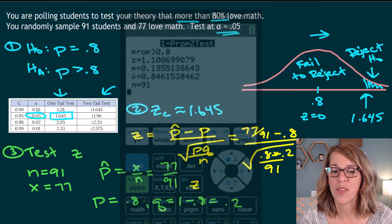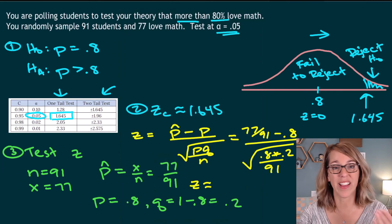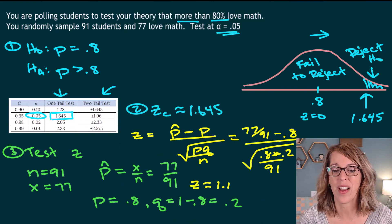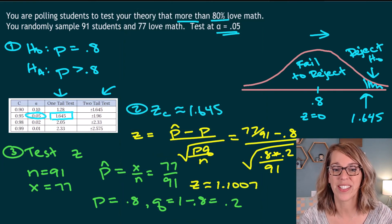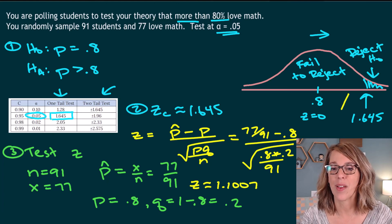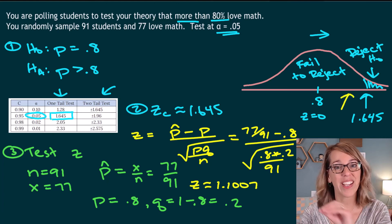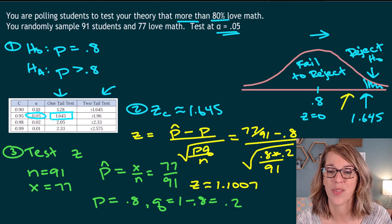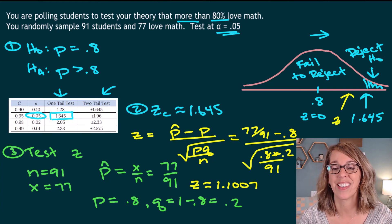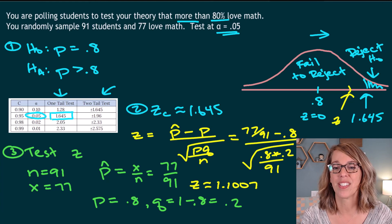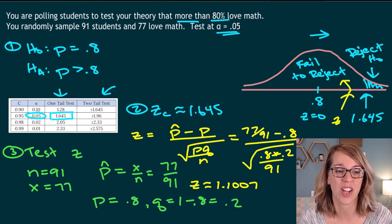So our test z, whether you end up using the formula or the calculator, turns out to be about 1.1007. Now that's going to live about over here when I'm putting it in line with my other z-scores. So this is going to be my test z. Notice that it falls into my fail to reject region.